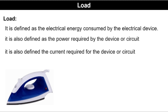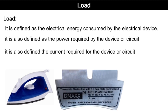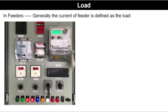Suppose we have an iron. If we see the nameplate, the power rating is indicated as 750 W, so we can say the load of the iron is 750 W. For higher feeders like 11 kV, 33 kV and above, the term load is used to indicate the current of the feeder. If you have visited any receiving station or grid station, you have seen the control panel of the feeder as shown in the figure — the current of the feeder is indicated in the ammeter. If the ammeter reading is 200 Amperes, we can say the load of the feeder is 200 Amperes.